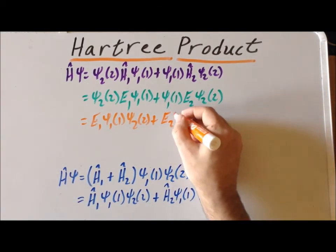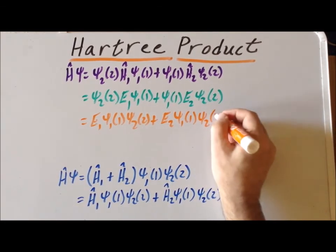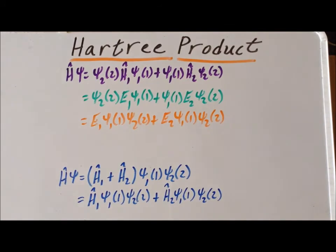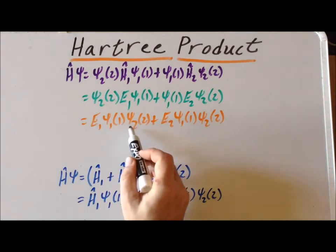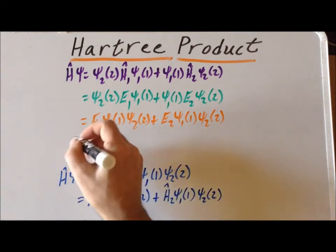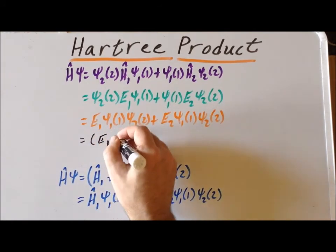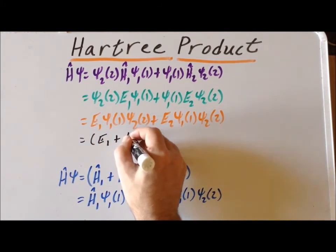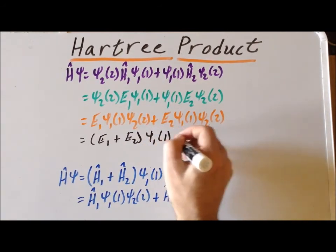So what does this tell us? Well, I notice that I have a common factor of ψ₁, ψ₂, in each of the terms. So I can factor that out using the reverse distributive law. So that gives me E₁ plus E₂ times ψ₁ of 1 times ψ₂ of 2.